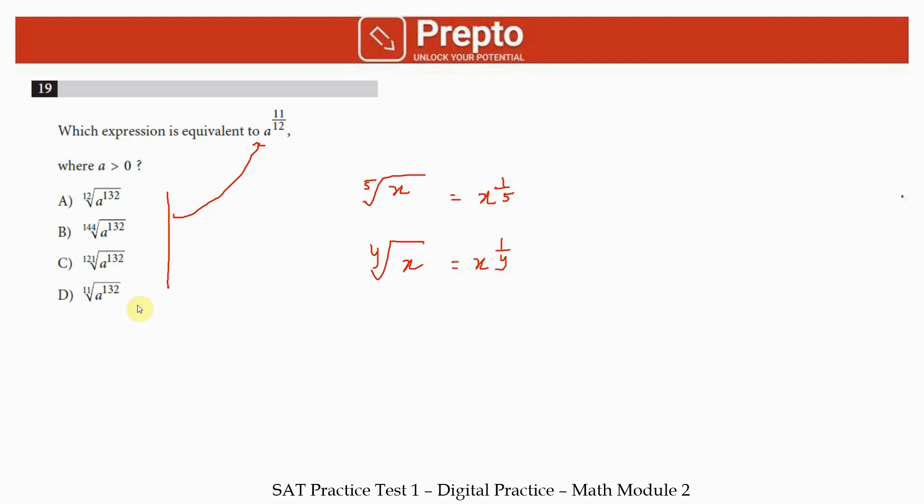The first option is a raised to 132 with the 12th root of that, so I'll write it as 132 divided by 12, which is a raised to 11. Correct! The second one is a raised to 132, and since you have 144 outside, you divide by 144. You'll cancel to get 11 on top, 12 on bottom. Unlike English where you'd check all options, in math you don't need to—the answer is option B.